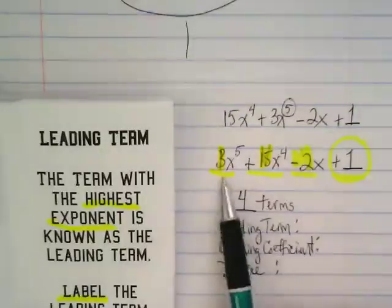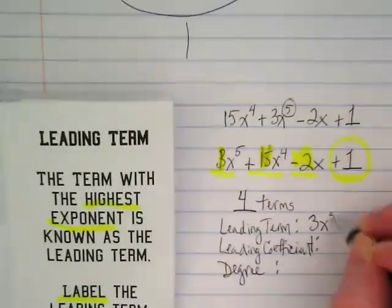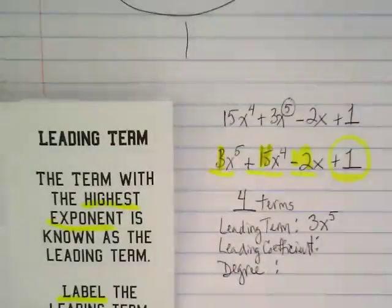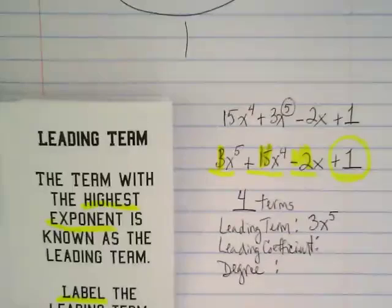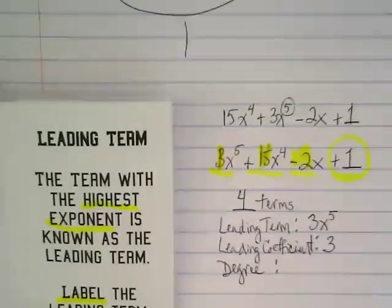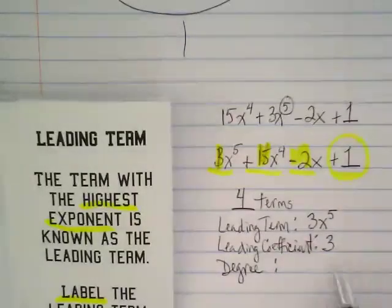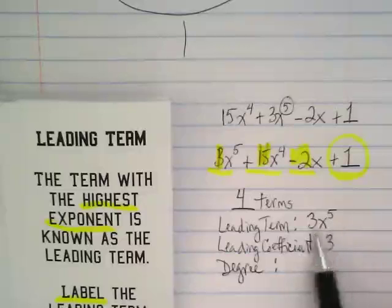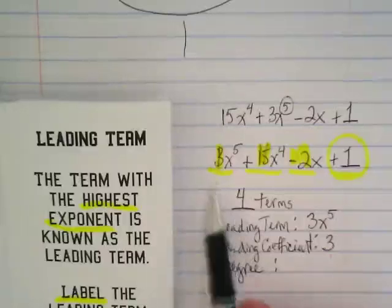So our leading term here is 3x to the 5th power. Let's put that in our list. 3x to the 5th power is our leading term. What is our leading coefficient? 3. The leading coefficient goes with the leading term. So this is 3 because it goes with this. Because it's connected to that power of 5, that's what puts it right out front.